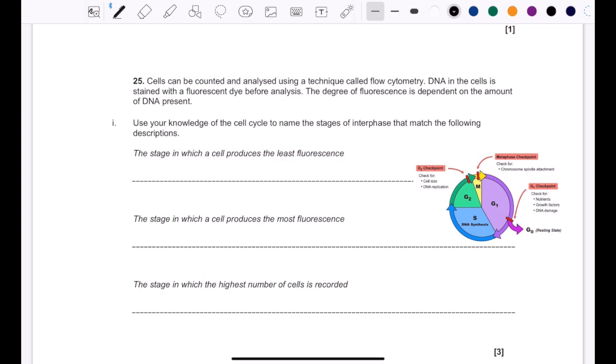Now, when you read more into the question, it says the stage in which a cell produces the least fluorescence. Okay, well, what is fluorescence? What is it referring to? So I'm going to read the information. The degree of fluorescence is dependent on the amount of DNA present. That's the fact. But then now you're thinking, well, okay, there's the amount of DNA present, so let me remember the cell cycle, let me match up where I think the stages are. But with this question, yes, you're going to be doing that, but you have to think more linearly. You need to bring together all the information you know of this subtopic, cell cycle, and then be able to write the stage.